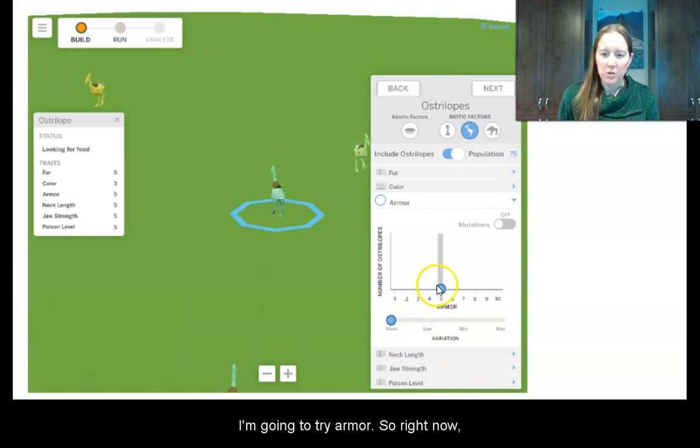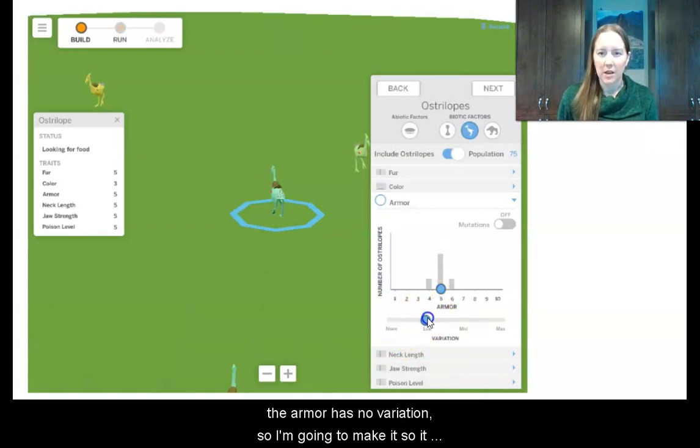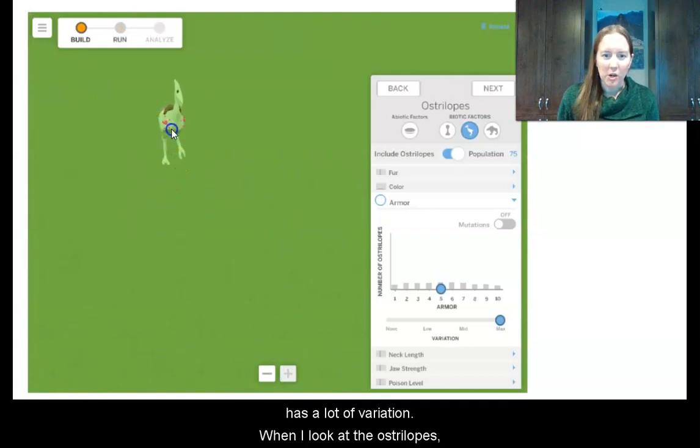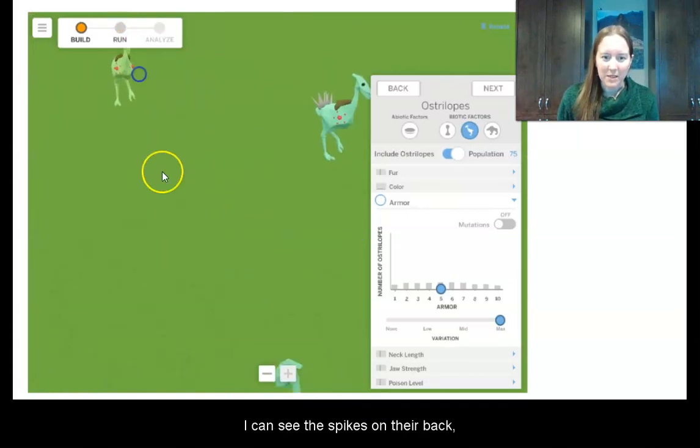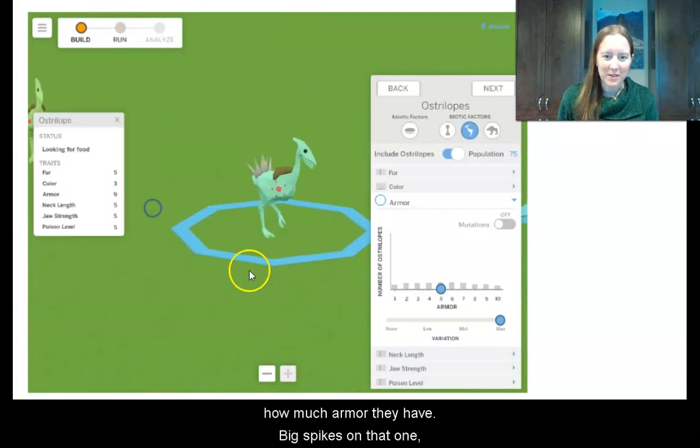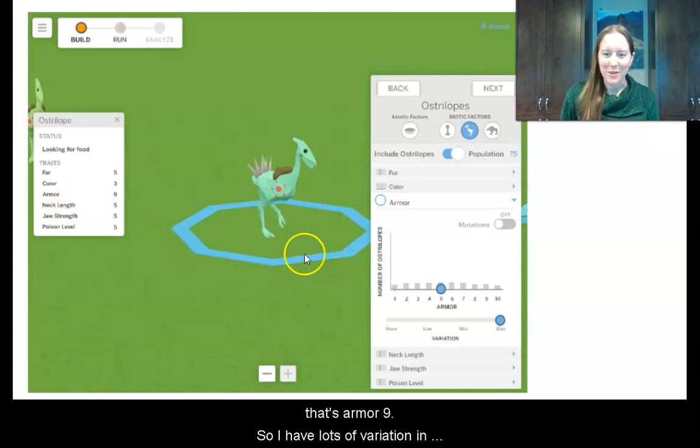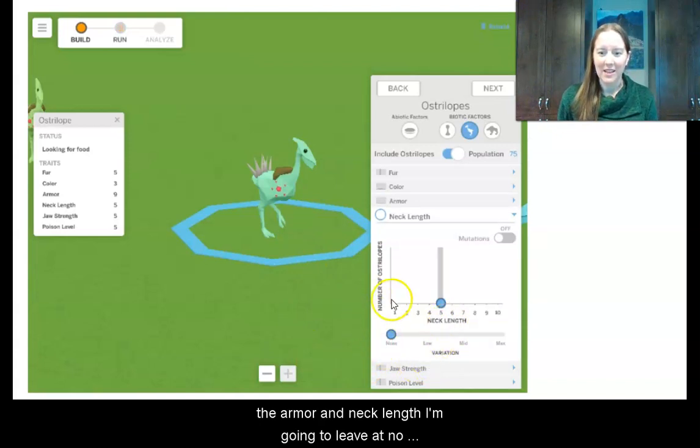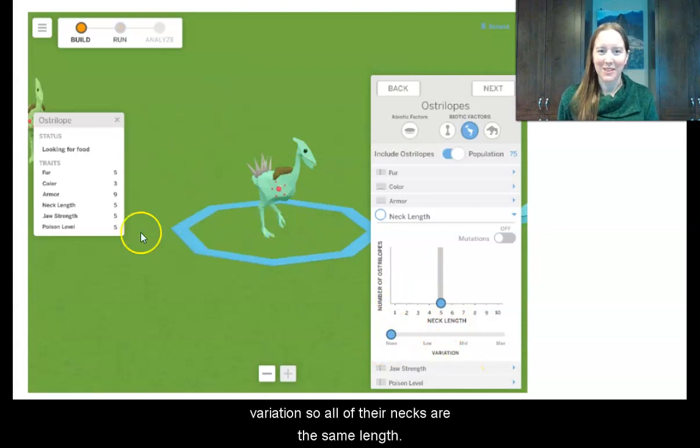Then I want to make it so that one of my features of the ostrilope has a lot of variation and one feature has no variation. So I'm going to try armor. So right now the armor has no variation. So I'm going to make it so it has a lot of variation. And then when I look at the ostrilopes I can see these little spikes on their back and how much armor it has. Oh, I can't really see the spikes on that one. Here we go. There's some, there's big spikes on that one. So that is the armor nine. So it's got some big spikes on it. So I have lots of variation in the armor and then neck length, I have no variation. So all of their necks are the same length.